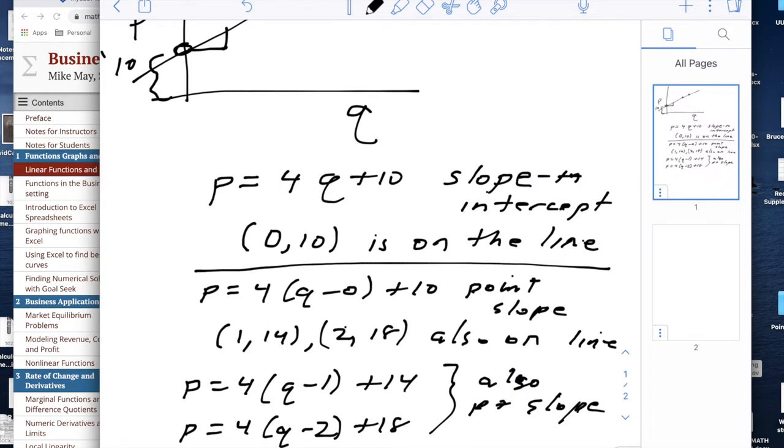So when I'm talking about point slope the advantage is I have to do less work given a slope of 4 and a point. I simply write down point slope form. The disadvantage is I have three different equations that are all the same line and when I was doing slope intercept form there was only one equation for a given line.